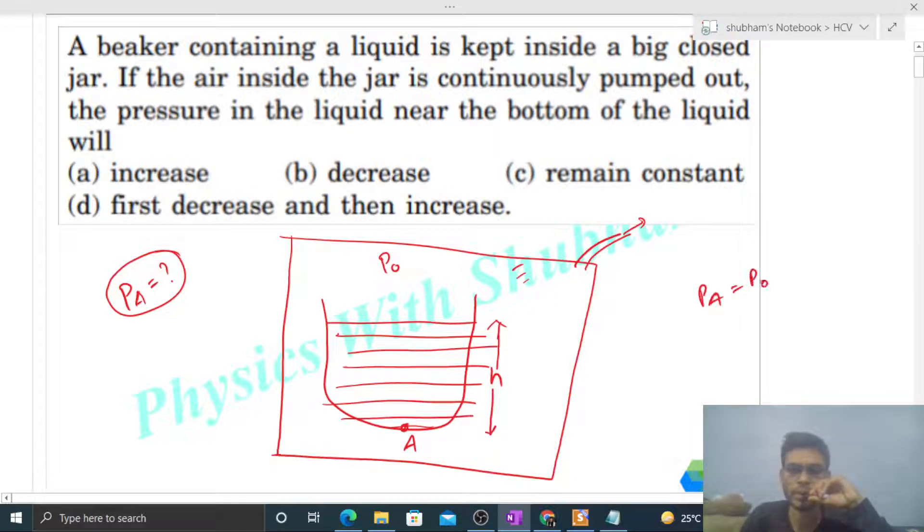ρ is the density of this liquid, and g is the acceleration due to gravity, and h is the height. And p₀ is the pressure inside this jar, jo ki surface pe hoga, p₀.